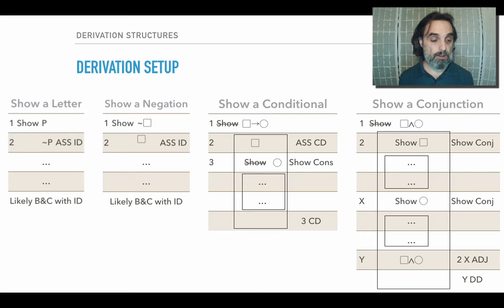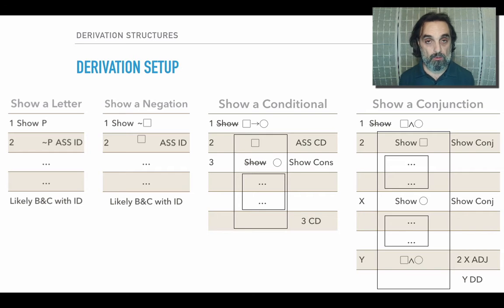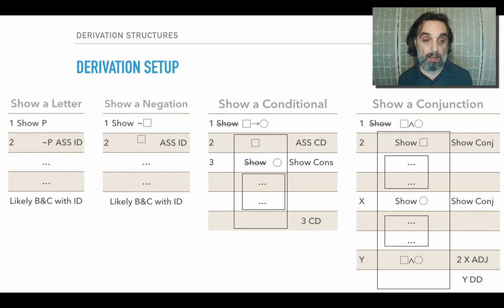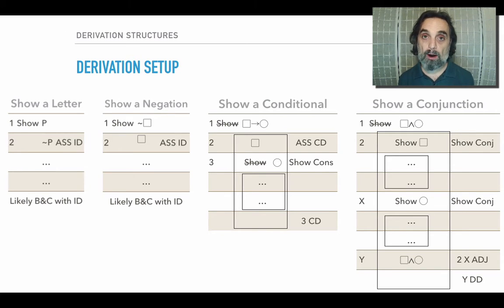If we're trying to show a negation, then we'll do the same thing. We'll make an indirect assumption and proceed, and again, it's likely that we'll box and cancel with ID — not necessarily, maybe direct derivation — but likely with indirect derivation. And so again, we're going to want to have our eye out for any contradiction.